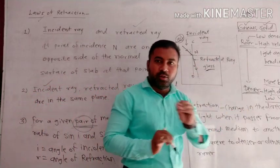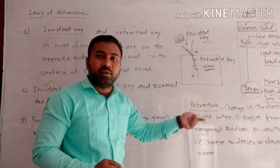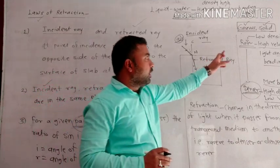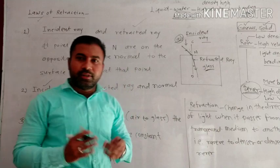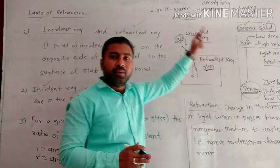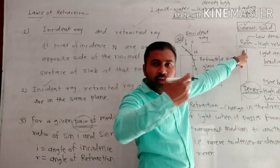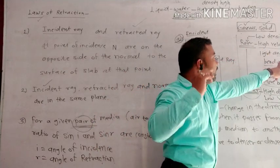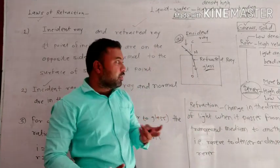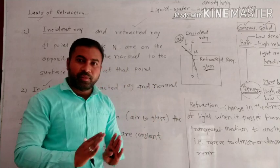There are many velocity and bending properties associated with rarer and denser media. There are gases and solid studies. In liquids too, we consider rarer and denser properties. In solid and gaseous media, a rarer medium has high velocity, less bending, and low density.